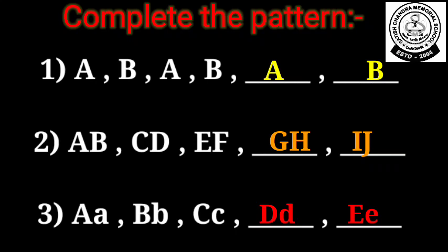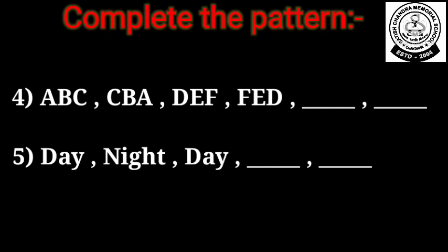Now let us see some more questions. That is question number 4. A, B, C, then C, A, B. Again D, E, F, F, E, D. So children you can see it is continued. First one is written in correct order, then second term it is written in opposite order.